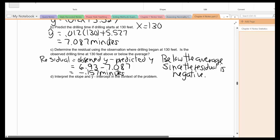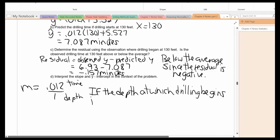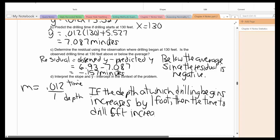And interpret the slope and the y-intercept. Well, the slope is this as a fraction. So remember, this is the time, and this is the depth. So when they ask you to interpret, we're going to write a sentence in the context of the problem on exactly what the slope means. If the depth at which drilling begins increases by one foot, then the time to drill five feet increases by 0.012 minutes.